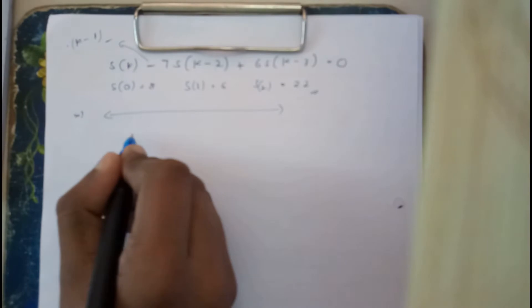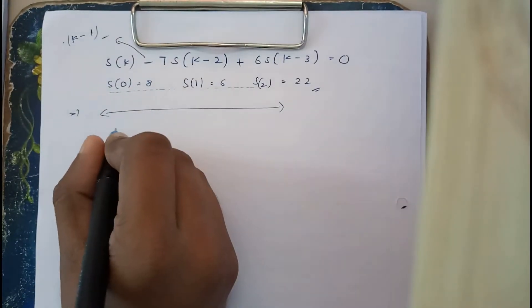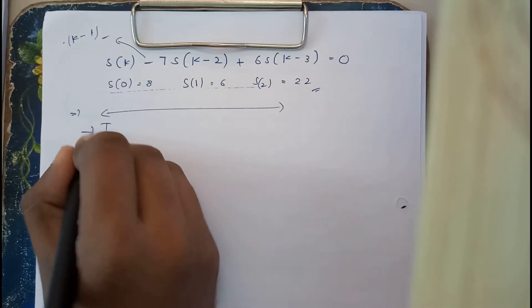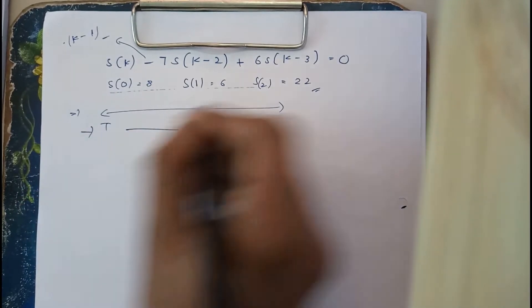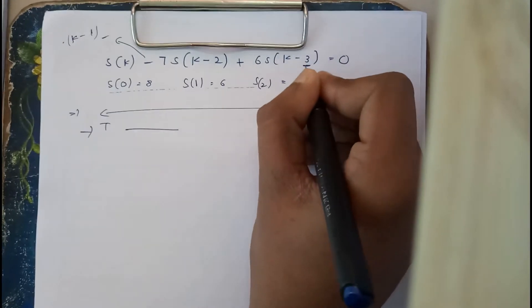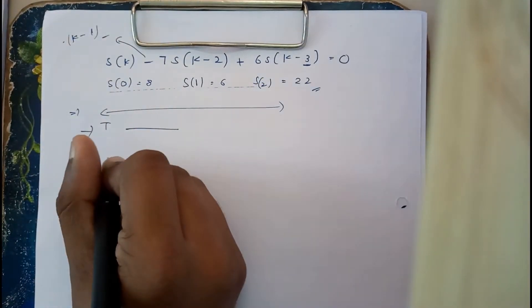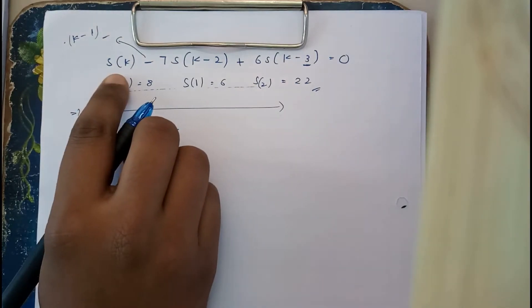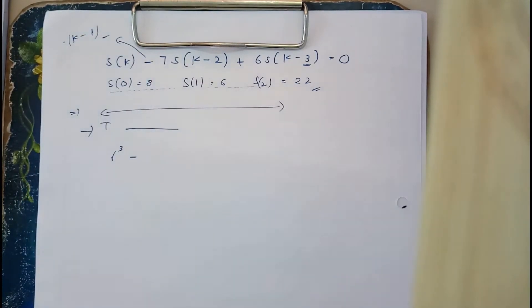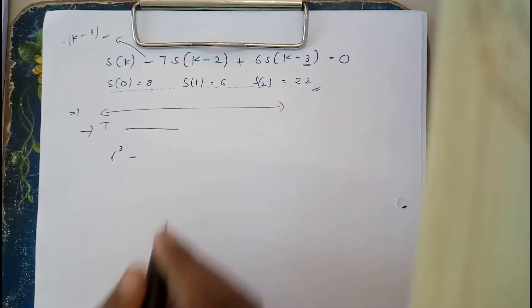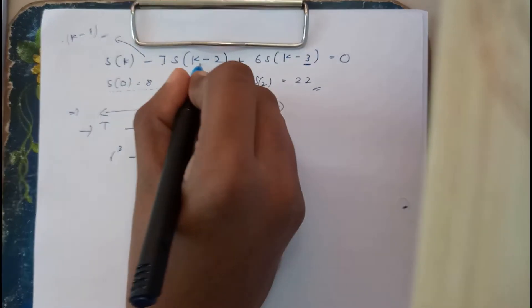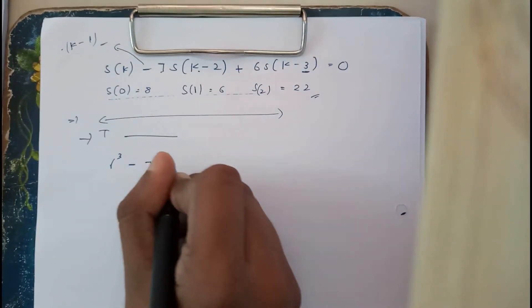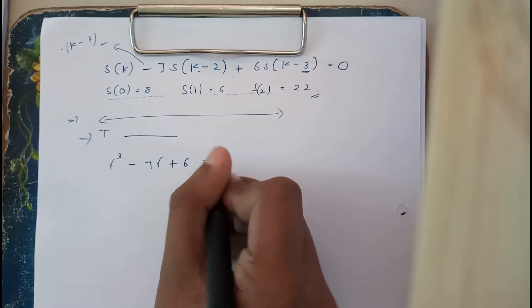Initially, write down the question and the given values. Then find the characteristic equation. The maximum order here is 3, so the characteristic equation starts at r-cubed. Since the middle term is missing, there is no r-squared term, giving us: r³ − 7r + 6 = 0.